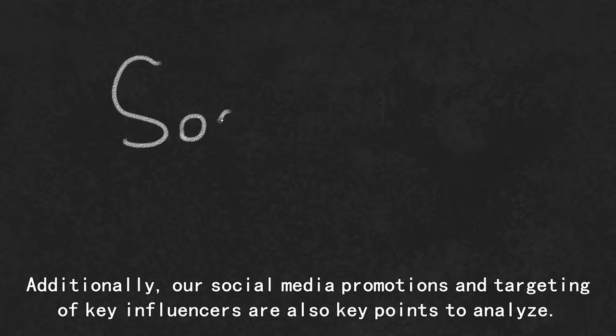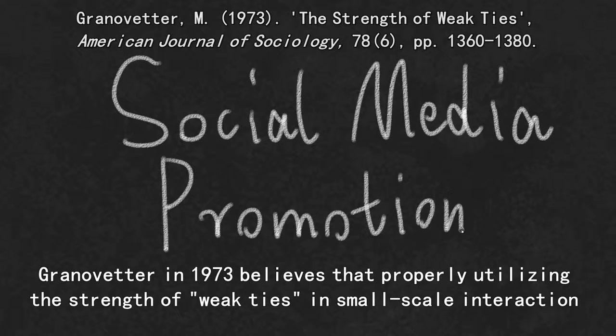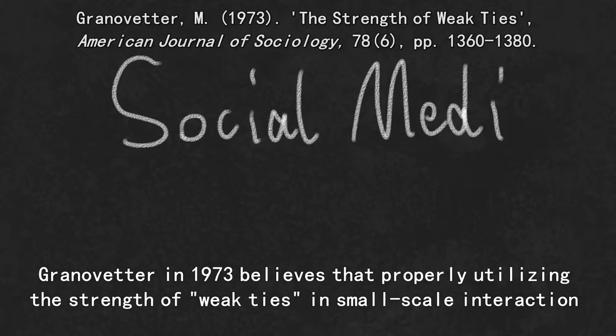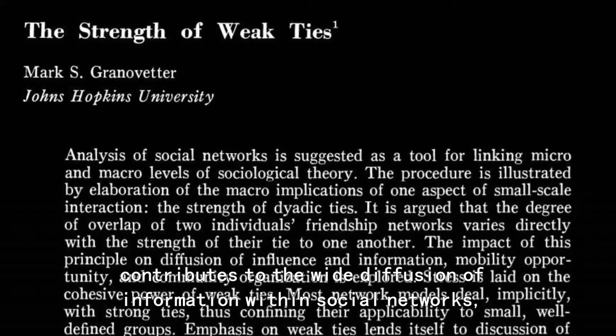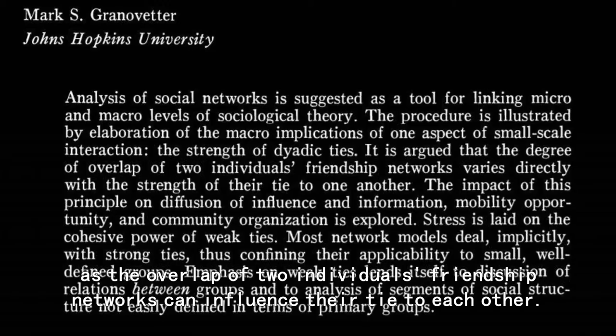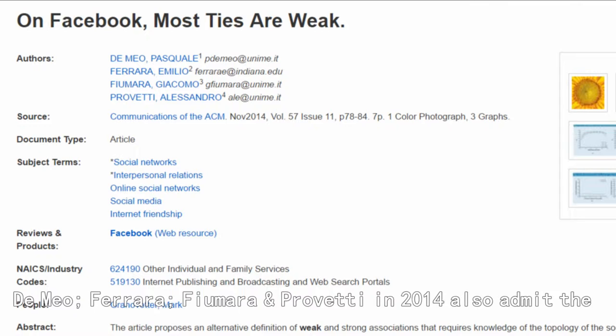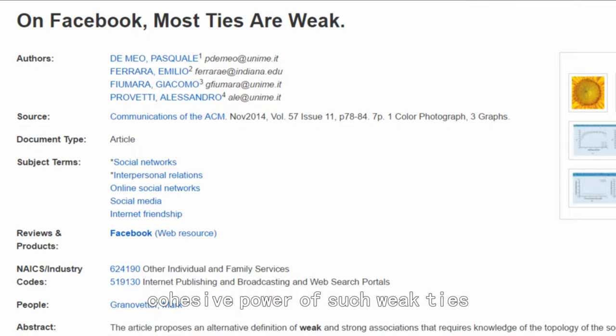Additionally, our social media promotions and tracking of key influencers are also key points to analyze. Granovetter in 1973 believes that properly utilizing the strength of weak ties in small-scale interaction contributes to the wide diffusion of information within social networks, as the overlap of two individuals' friendship networks can influence their ties to each other. Dimeo, Ferrara, Flumara, and Trevisi also admit the concave power of such weak ties and argue that most ties are weak on social media.